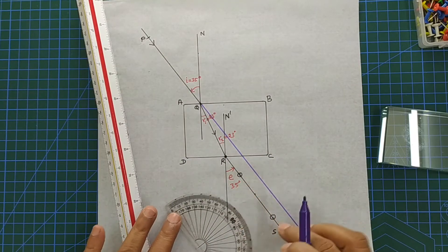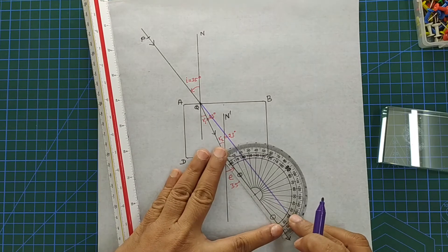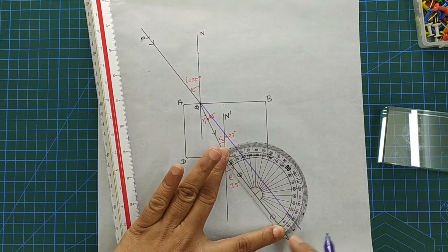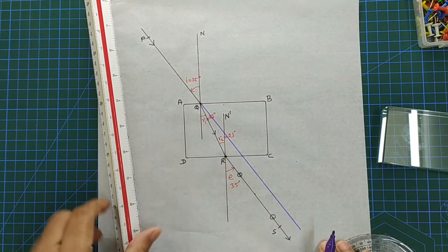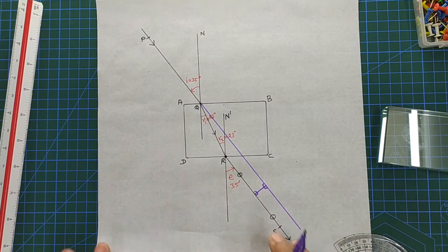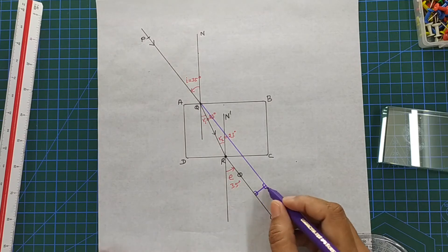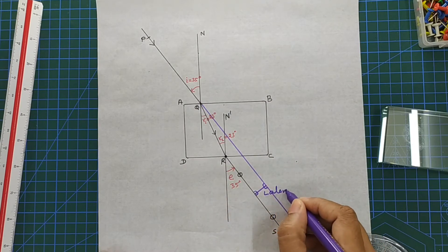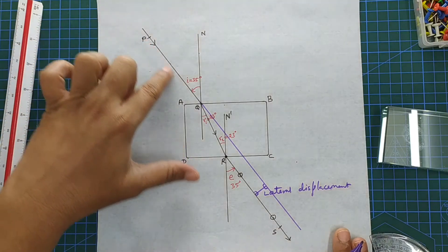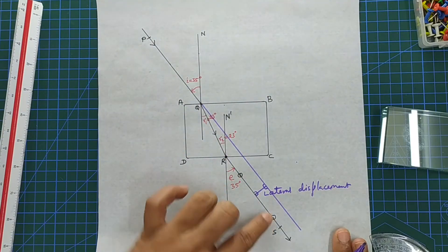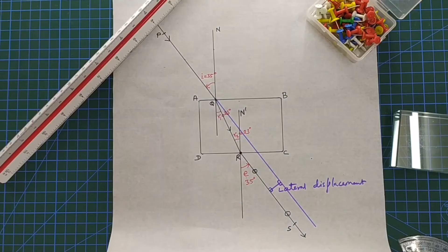If the glass slab were not present, the incident ray would have continued straight. Marking a point on the emergent ray and drawing a perpendicular allows us to measure the perpendicular distance between the produced incident ray and the emergent ray. This perpendicular distance is called lateral displacement. Our main objective was to trace the path of a ray of light through a rectangular glass slab.